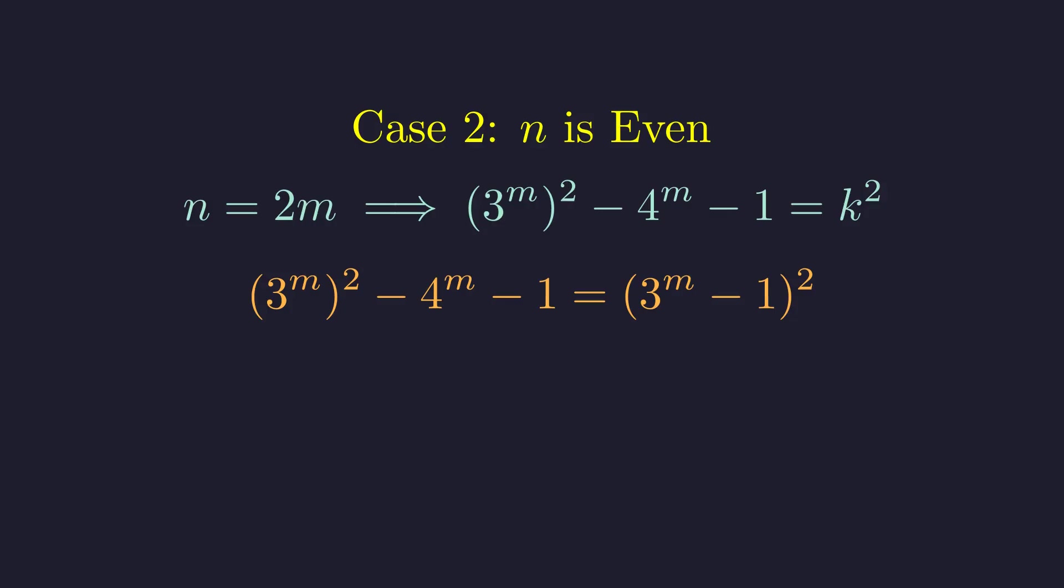Let's expand this squared term, using the standard formula for squaring a binomial. Perfect! The 3 to the m squared terms cancel out, and we're left with a much simpler equation. Let's rearrange this to get all the exponential terms on one side, moving terms around algebraically. Now we can factor out a 2. Great! Now we have 2 times 3 to the m minus 1. Let's rewrite 4 to the m as a power of 2. Since 4 equals 2 squared, 4 to the m becomes 2 to the 2m. Now we divide both sides by 2. And here's our key equation: 3 to the m minus 1 equals 2 to the 2m minus 1.